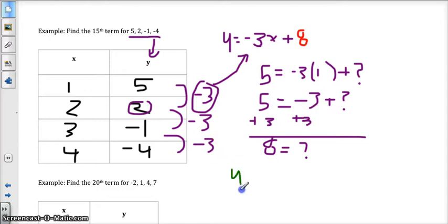So if we have to now find the 15th term, we have y equals negative 3 times 15, because that's the x, is the term, adding it to 8. We have y equals negative 45 plus 8, which then gets you an answer of y equals negative 37. So the 15th term for the pattern 5, 2, negative 1, negative 4, is negative 37.